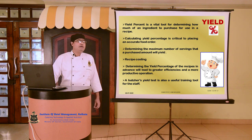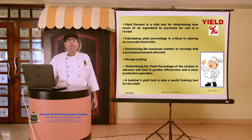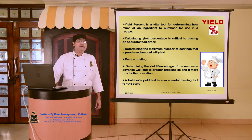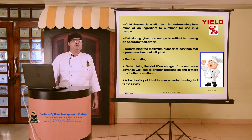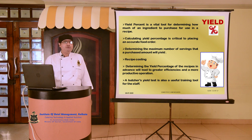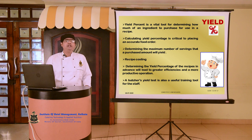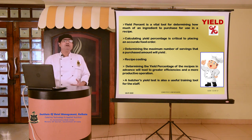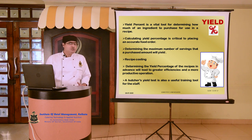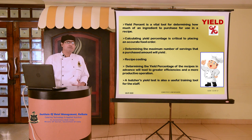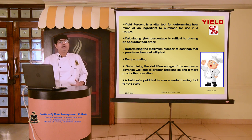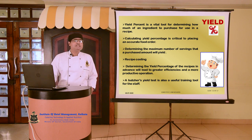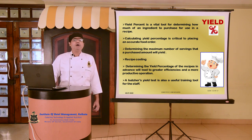When we say various pickups of the day, we mean the extent of the à la carte orders, the banquets, and the allied areas. Calculating yield percentage is critical to placing an accurate food order. When we have a net usable quantity in mind, it helps us to procure in a more justified fashion, which will also prevent overstocking or understocking of materials. At the same time, we can find out the maximum number of servings that a purchased amount will yield.